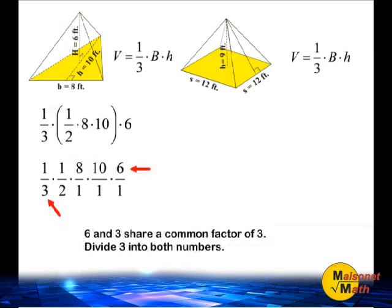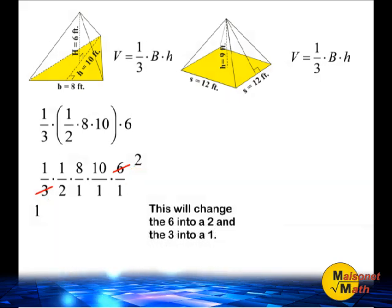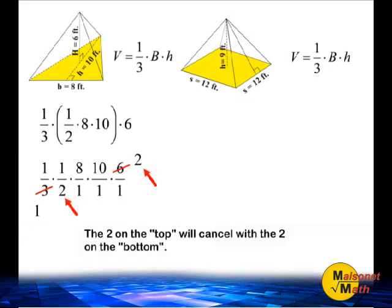In this example, we can cancel out the 6 and the 3 because they share a common factor of 3, and we can turn those two numbers into the number 2 on the top and a 1 at the bottom. Notice that we have a 2 remaining on the bottom and there is also a number 2 on the top. We can cancel out both of those numbers and turn them both into the number 1.